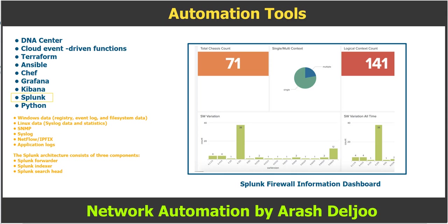The Splunk architecture consists of three components: first, the Splunk forwarder; second, the Splunk indexer; and third, the Splunk search head. The Splunk forwarder is a software agent installed on endpoints to collect and forward logs to the Splunk indexer.